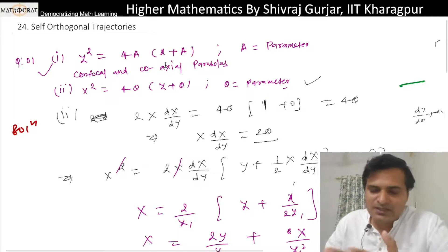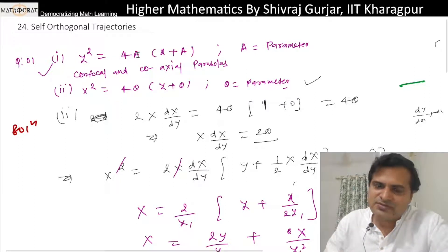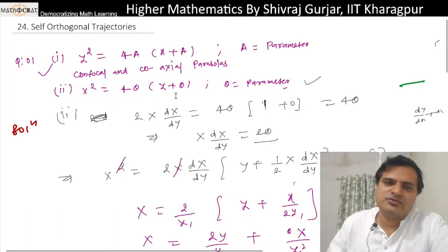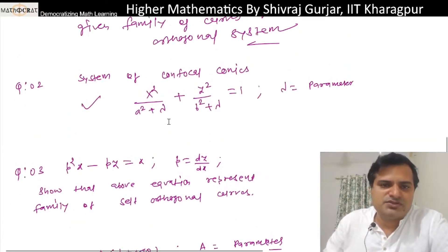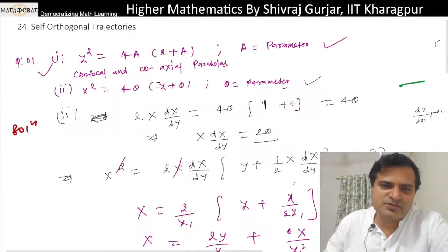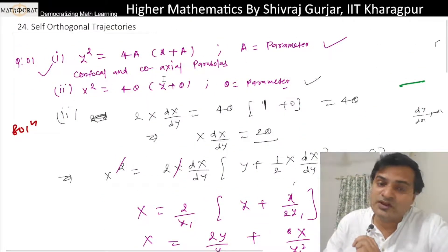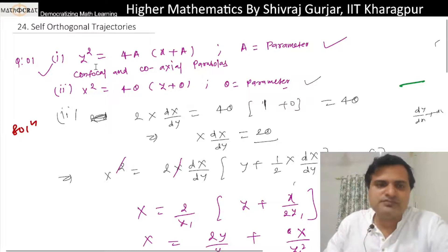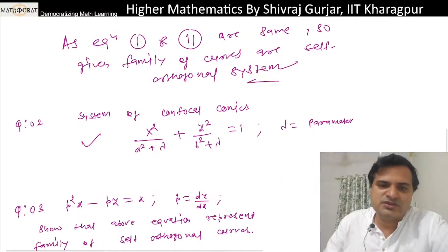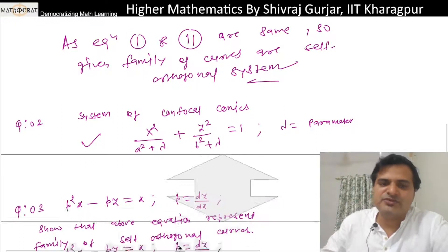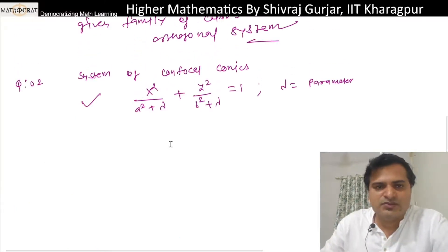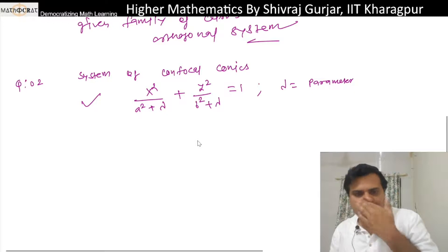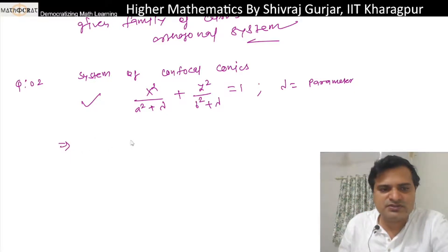You may try this using a similar concept. Now let's take the next question. These are the confocal conics — this has also been asked, and it also represents a self-orthogonal family. Here lambda is the parameter. Let's differentiate: we get 2x.